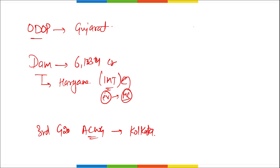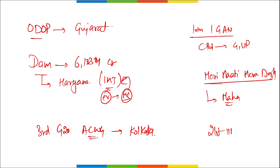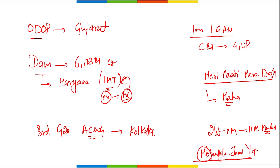Which academy became the 10th member of the Interpol Global Academy Network? It is the CBI Academy, located in Ghaziabad, Uttar Pradesh. Meri Maati Mera Desh campaign was launched by Maharashtra's Chief Minister Eknath Shinde. The 21st IIM is IIM Mumbai — the National Institute of Industrial Engineering, located in Maharashtra, became the 21st IIM. Mojangal Jami Yojana is related to Odisha. Khel Maharan will be organized by the Assam Government. India's first Agriculture Data Exchange was launched by Telangana.